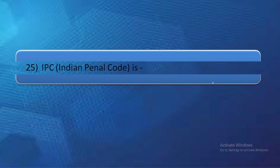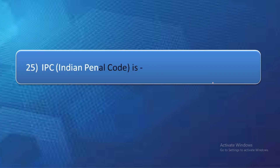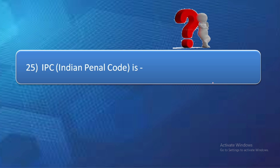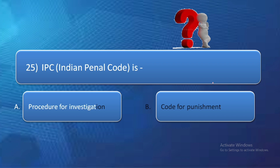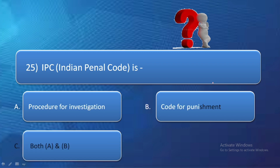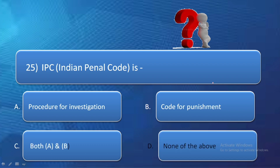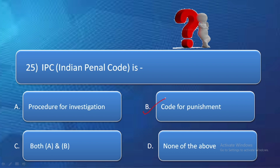Question number 25: The Indian Penal Code (IPC) is — option A: procedure for investigation, option B: code for punishment, option C: both A and B, option D: none of the above. The IPC describes punishments — it tells us what punishment will apply for any illegal act. So the correct answer is option B — code for punishment.